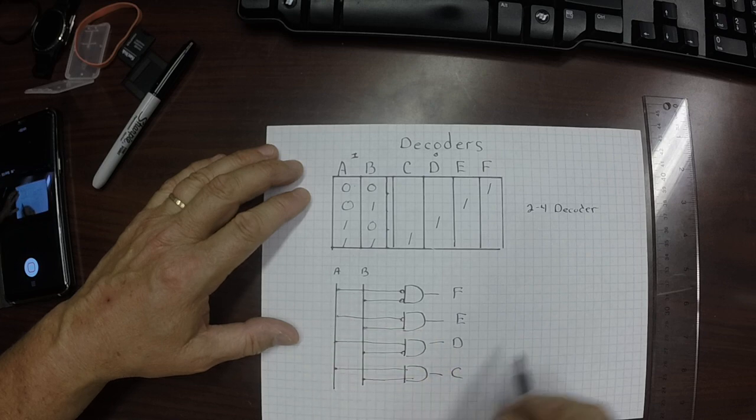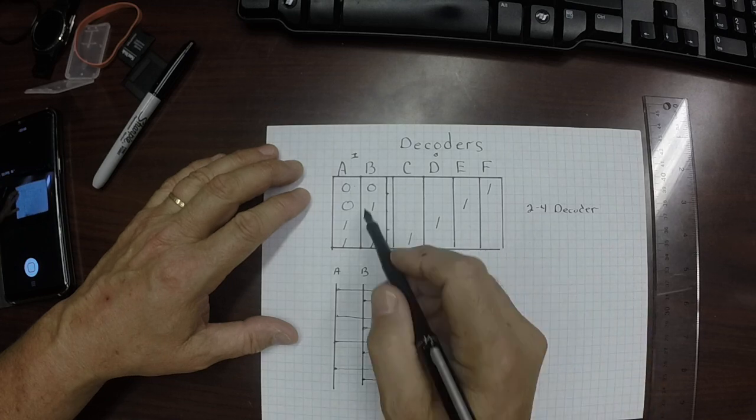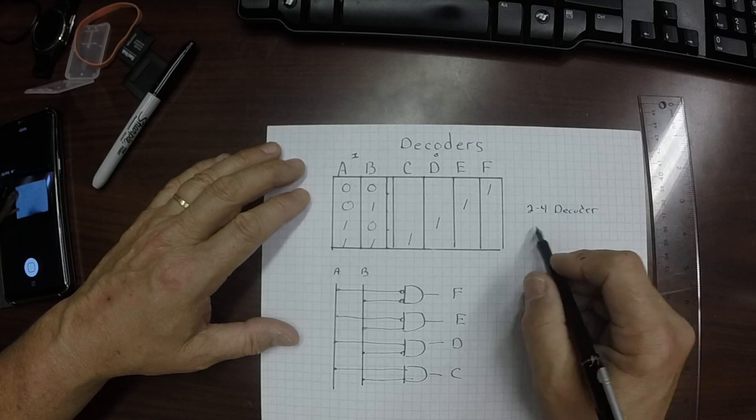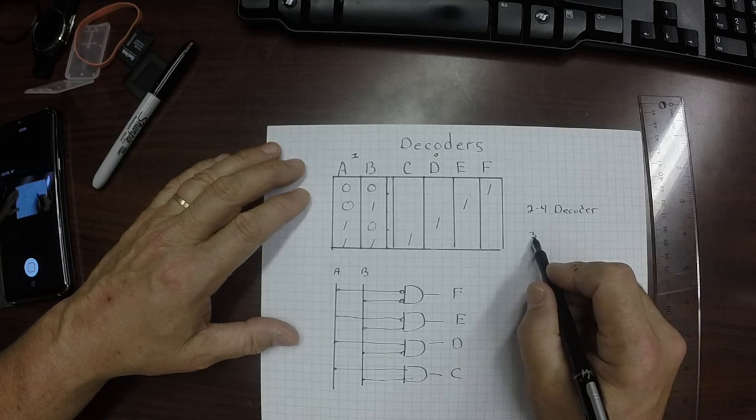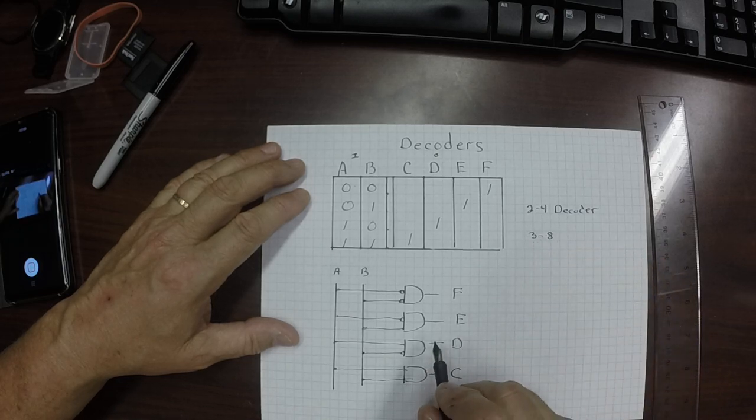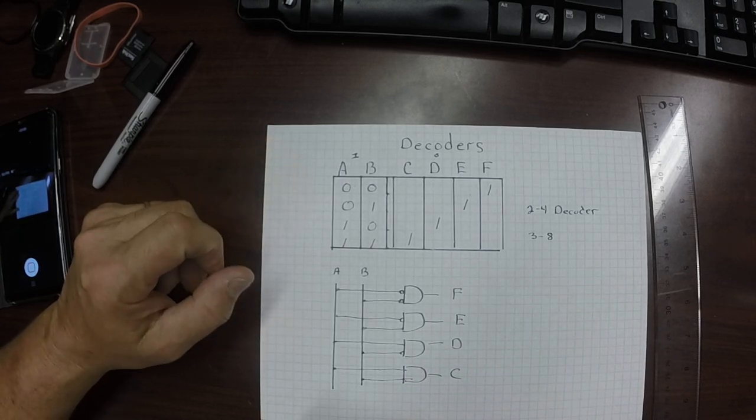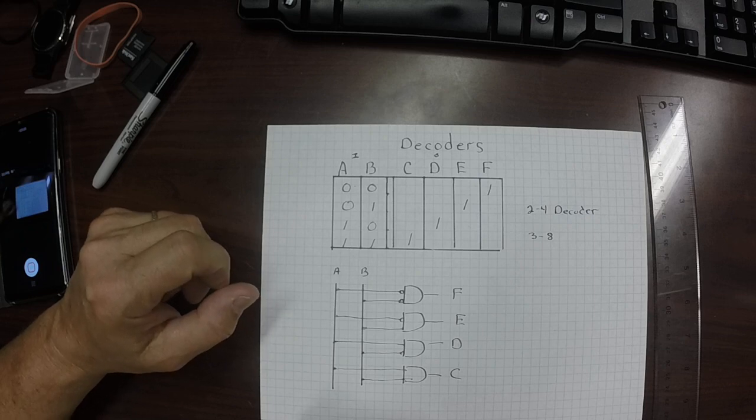And now this is called a 2 to 4 decoder, because with two inputs, we can output four different things. And of course, if you want to output with three bits, you can do a 3-8 decoder. This is called a decoder, and it's going to be used whenever we do our multiplexer example. And that's our next video.